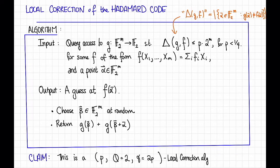More precisely, I claim that this algorithm is a local correction algorithm for the Hadamard code with parameter p, query complexity q equals 2, and failure probability γ, which is equal to 2p. This actually works for any p. The reason that I demanded up here that p be less than a fourth is because I want the failure probability to be strictly less than a half.